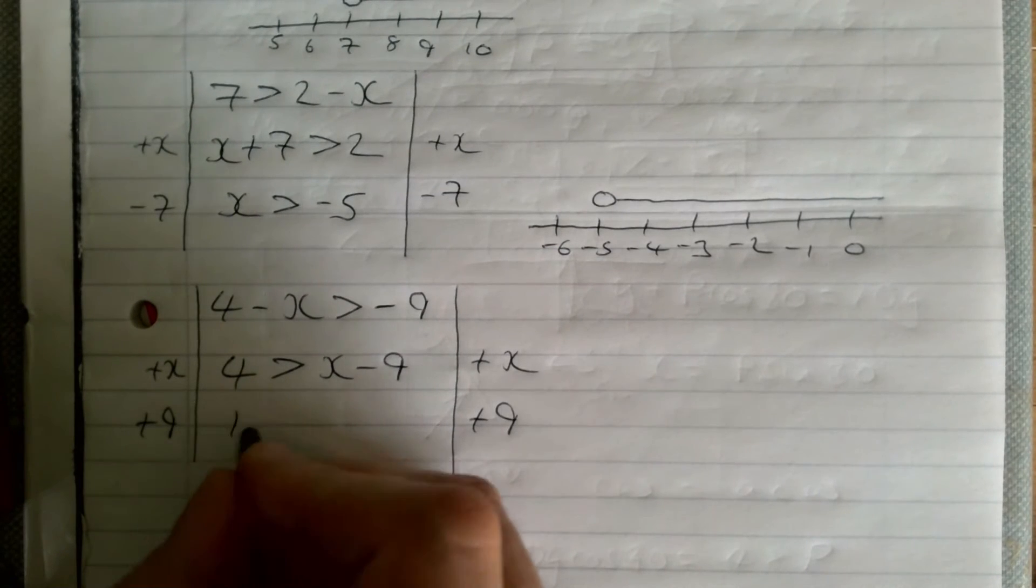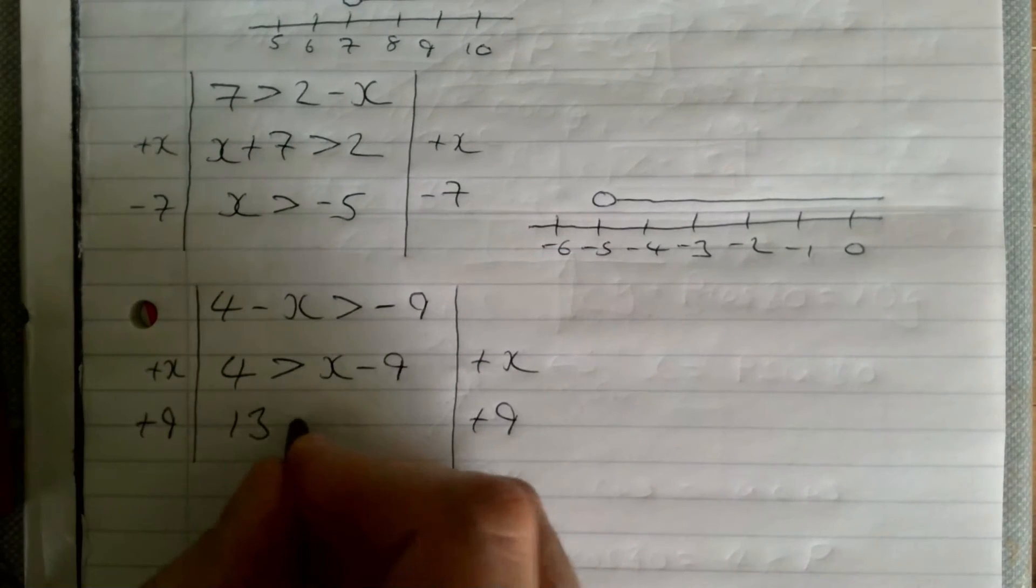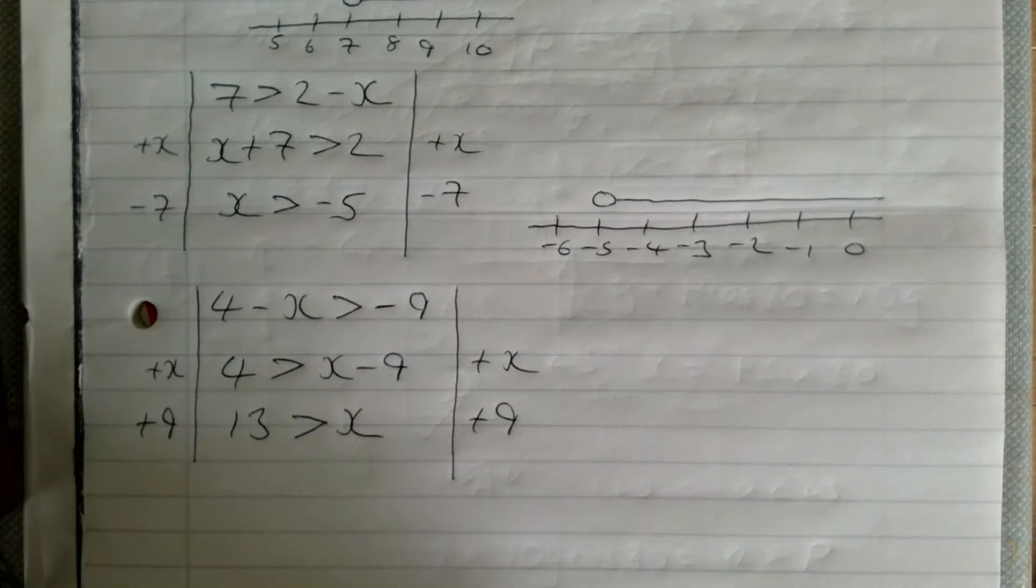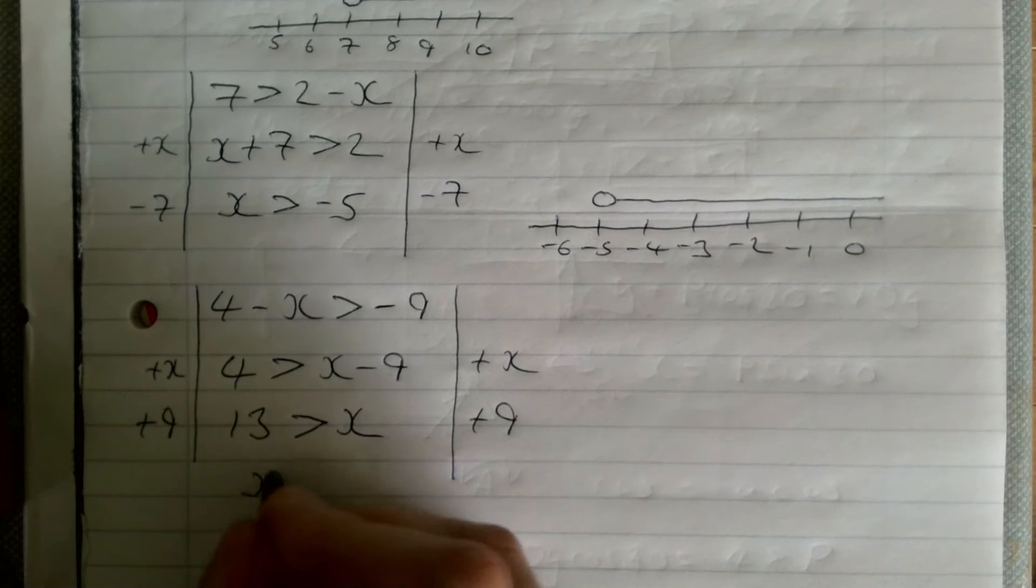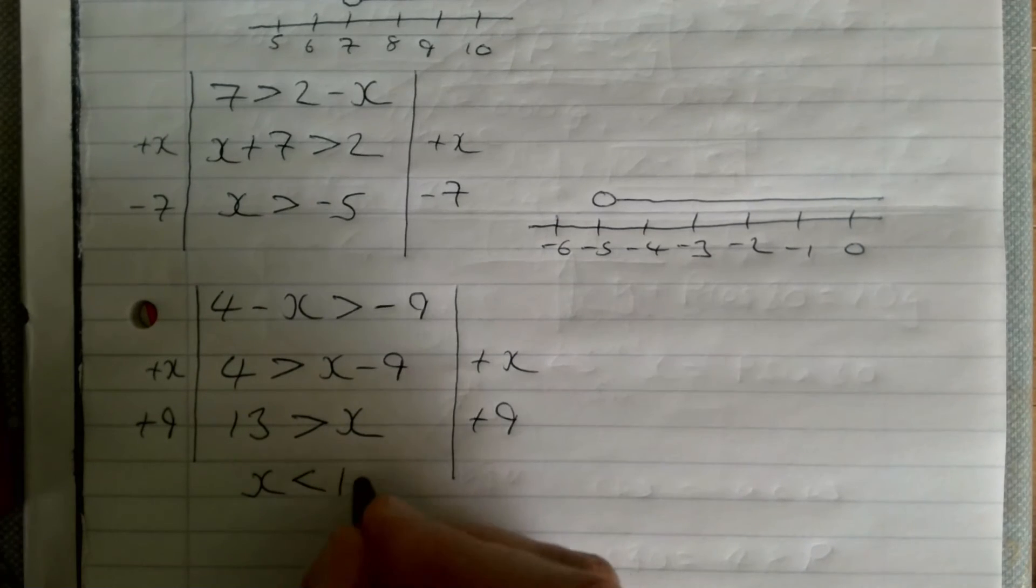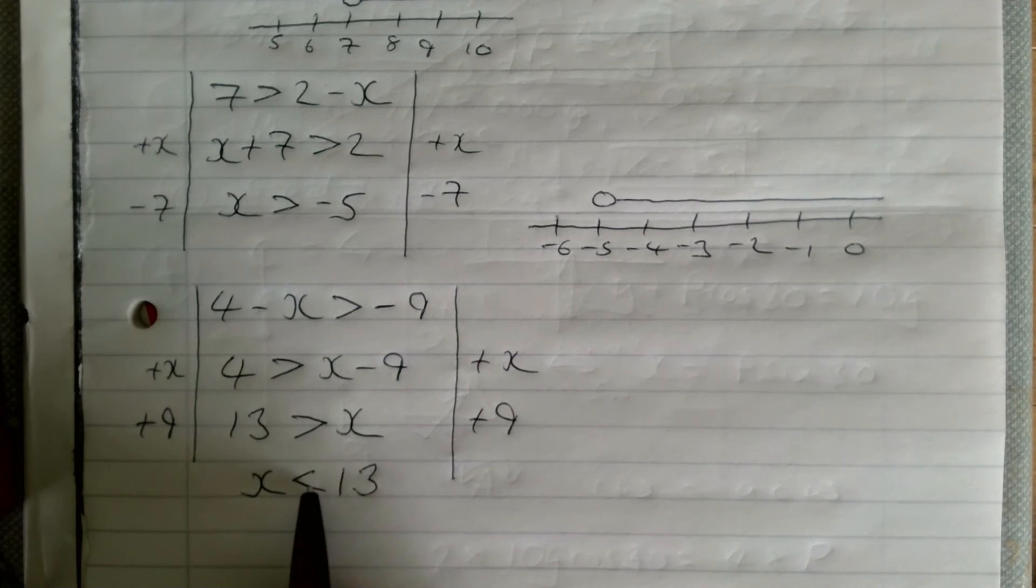Add 9 to this, I get 13 is greater than x. I'm nearly there. If 13 is greater than x, that means the same as x is less than 13. You need to be careful there - see that I've swapped the sign around because I've changed around the letter and the number. So x is less than 13.